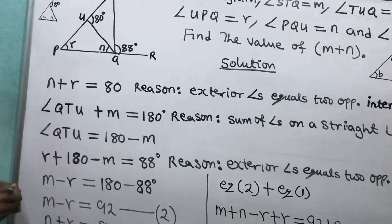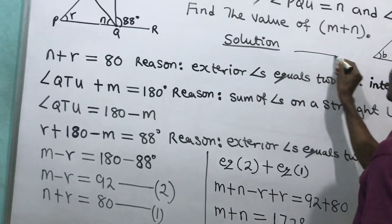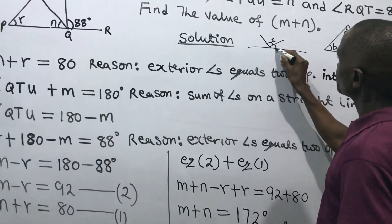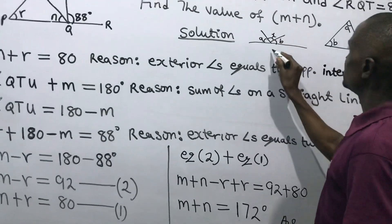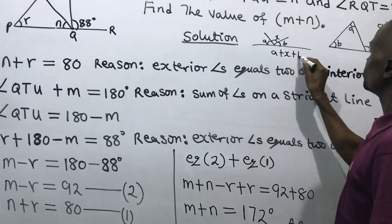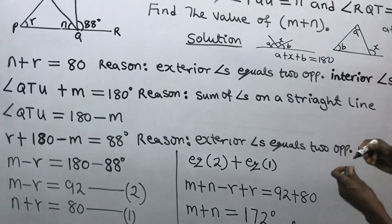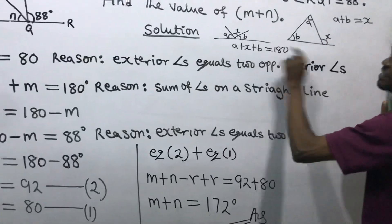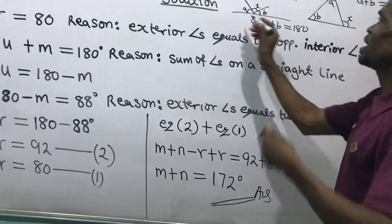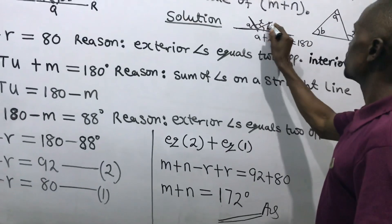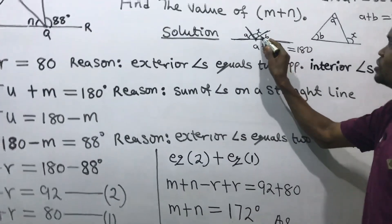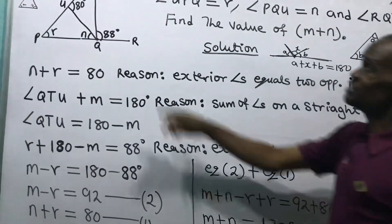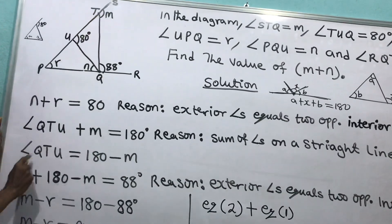What does it mean? If I have angles on this straight line — angle A, angle X, angle B — then A plus X plus B equals 180 degrees. This angle plus this angle plus this angle equals 180 degrees. Reason: sum of angles on a straight line. This angle originated at a point.